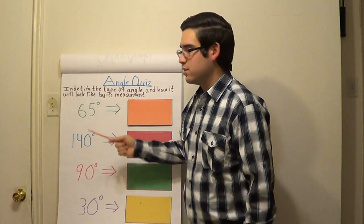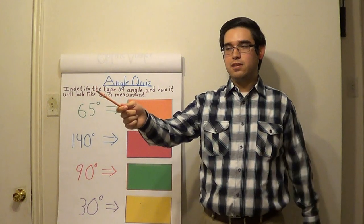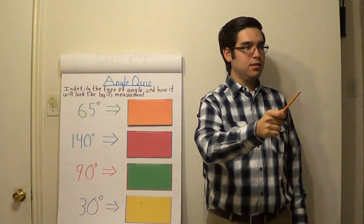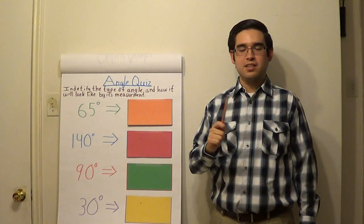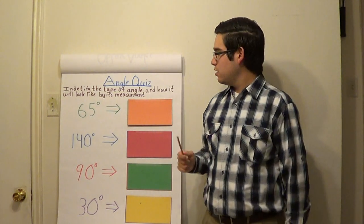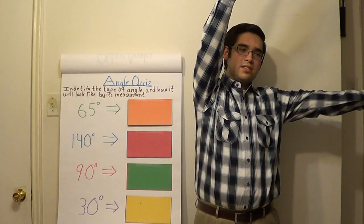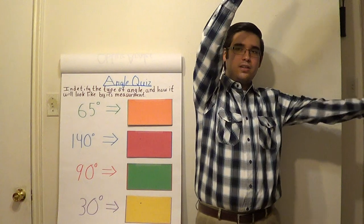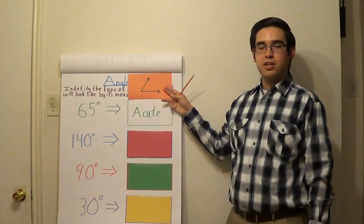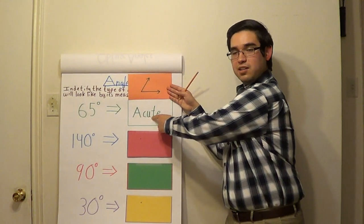Now, 65 degrees — what kind of angle would that be? Can you guys show me how it would look with your arms? Most of you are saying it looks like this. Let's see what it actually looks like. Looks like you guys were right — it is an acute angle. Good job!